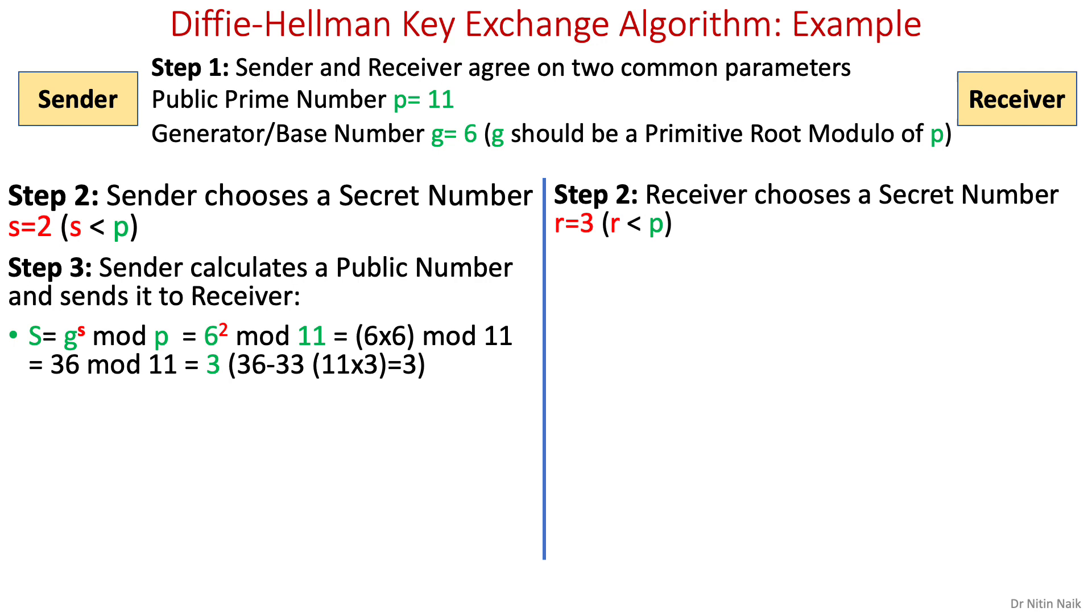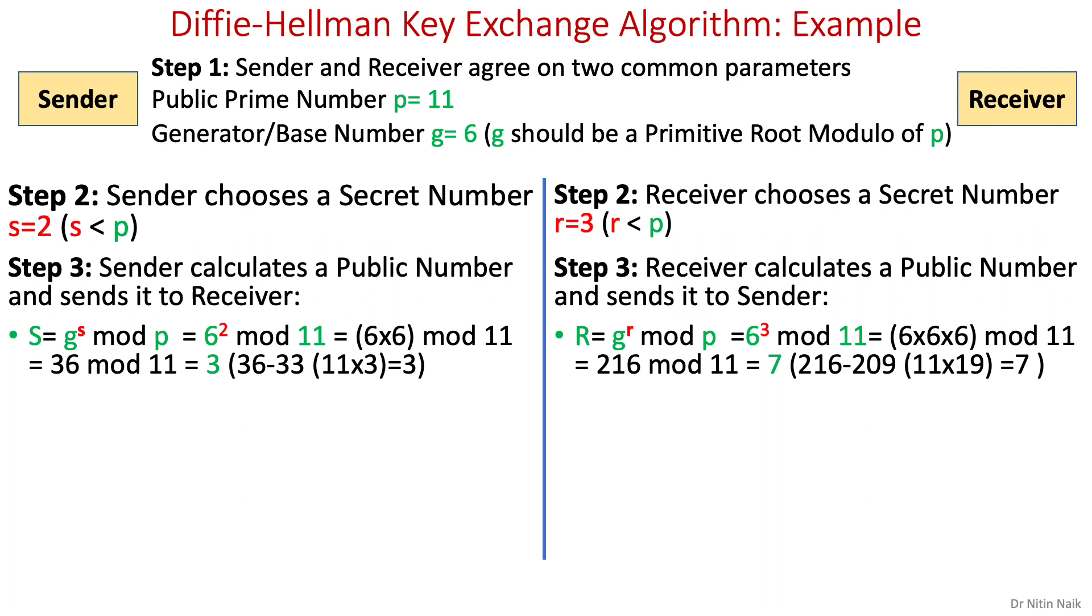In step three, sender calculates a public number using the secret number in g mod p formula and sends it to receiver. Similarly, receiver calculates a public number using secret number in g mod p formula and sends it to sender.